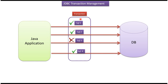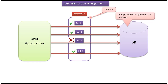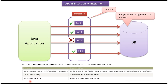Suppose if you are executing four SQLs inside the transaction boundary, and SQL 1, SQL 2, and SQL 4 are successfully executed but only SQL 3 is not successfully executed — it has failed. Then what we can do is roll back the entire changes using the connection.rollback method, so that changes won't be applied to the database. Here you can see the rollback method in the connection interface — using that we can cancel the transaction.